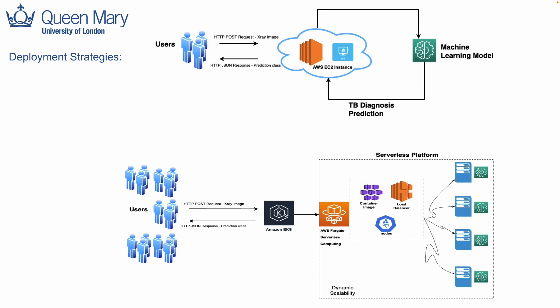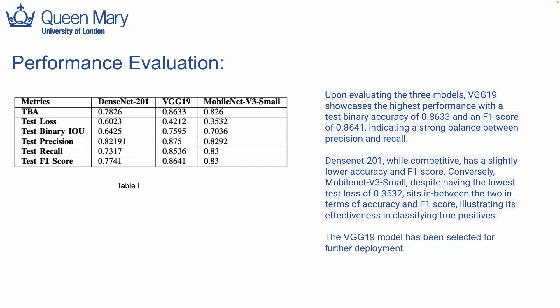This serverless approach helps us handle more incoming traffic requests and makes prediction faster. When analyzing machine learning models in critical applications like medical imaging, it's paramount to understand performance metrics. Binary accuracy measures correct predictions — VGG19 excels at 86.33%. Loss scores prediction error, where VGG19 indicates closeness to true values. IOU evaluates prediction overlap, vital for precise image segmentation, and precision-recall balances false positives and negatives. VGG19 shows a harmonious F1 score of 0.8641. Together, these metrics underscore VGG19's suitability for medical imaging, making it the chosen model for further deployment.